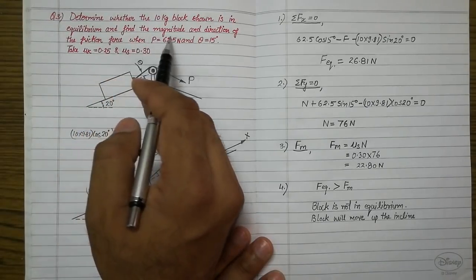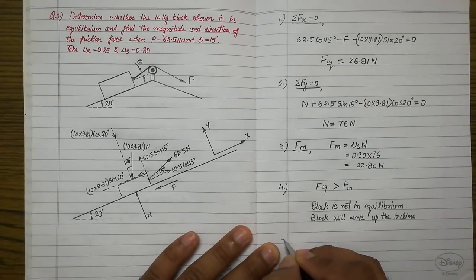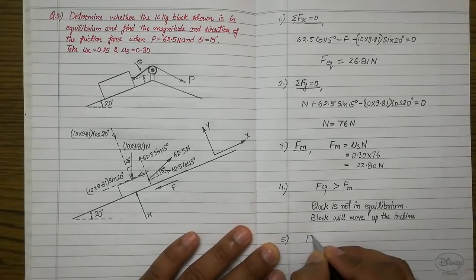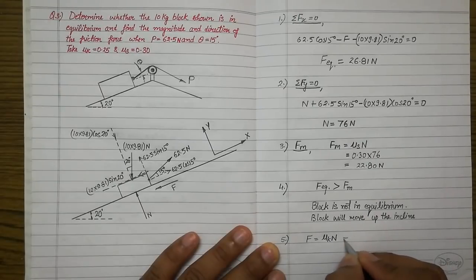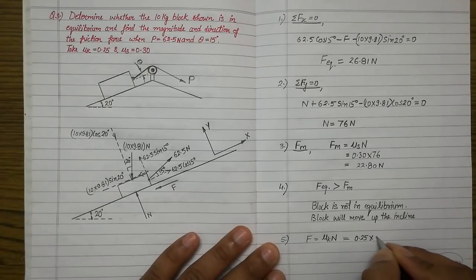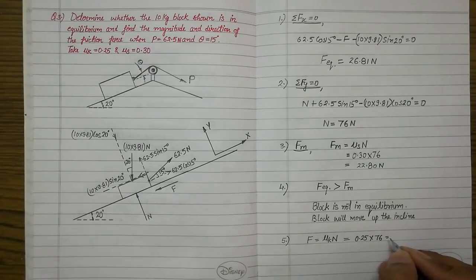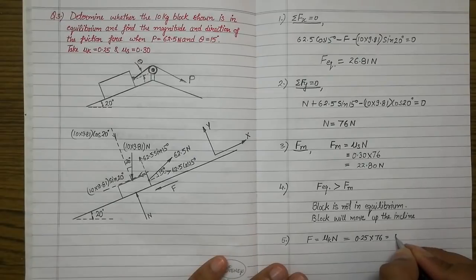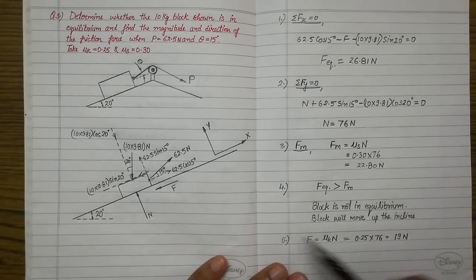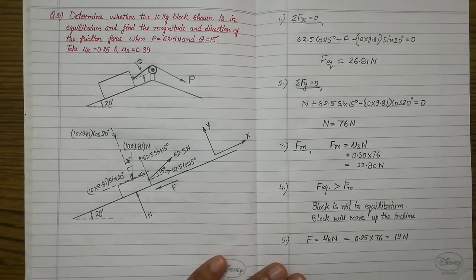For the second part — magnitude and direction of friction force: since the block is in motion, frictional force equals μk × N = 0.25 × 76 = 19 Newtons. Regarding direction: it is acting in the downward direction along the incline, since the block is moving up the incline. I hope this numerical is clear to you. Thank you very much.